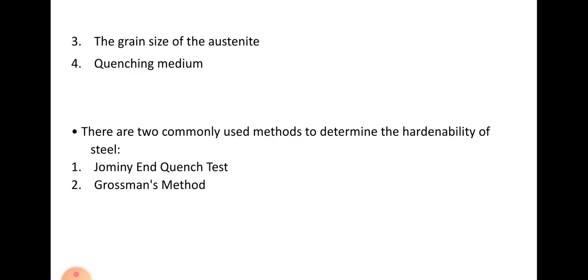There are two methods used to determine the hardenability of steel. First is the Jominy end quench test and second is Grossman's method. Commonly Jominy end quench test is used.